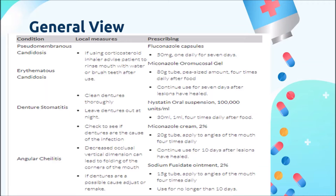Some local precautions should be taken to prevent the disease from recurring. If using a corticosteroid inhaler, advise the patient to rinse mouth with water or brush teeth after use. Clean dentures thoroughly and leave dentures out at night. Check to see if dentures are the cause of the infection. Decreased occlusal vertical dimension can lead to folding of the corners of the mouth. If dentures are the possible cause, adjust or remake them.